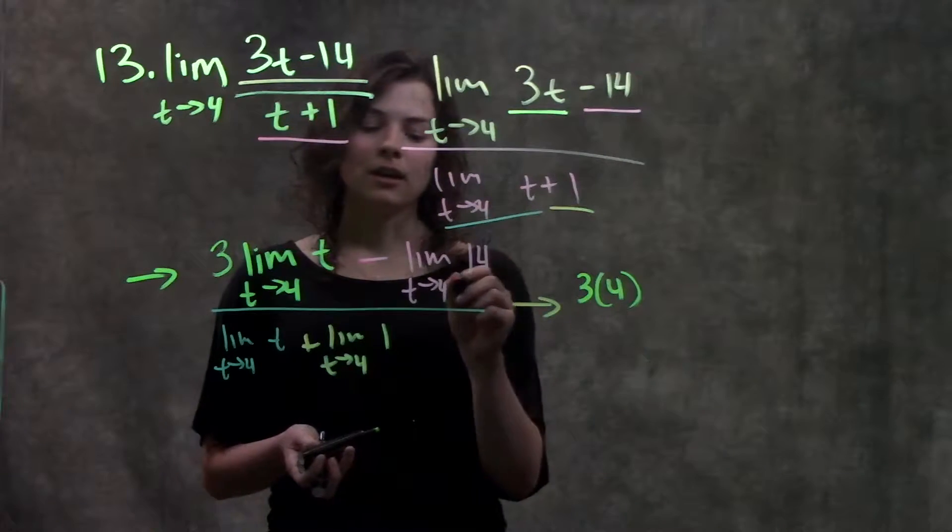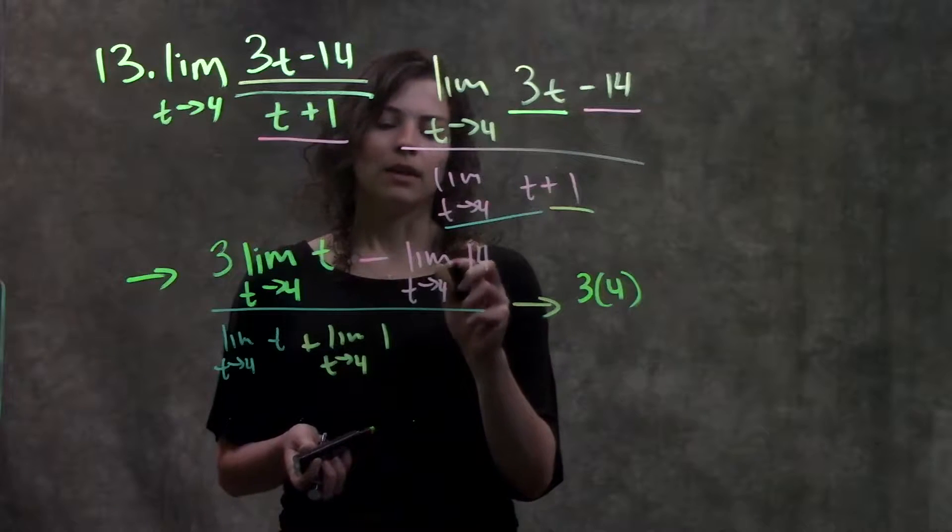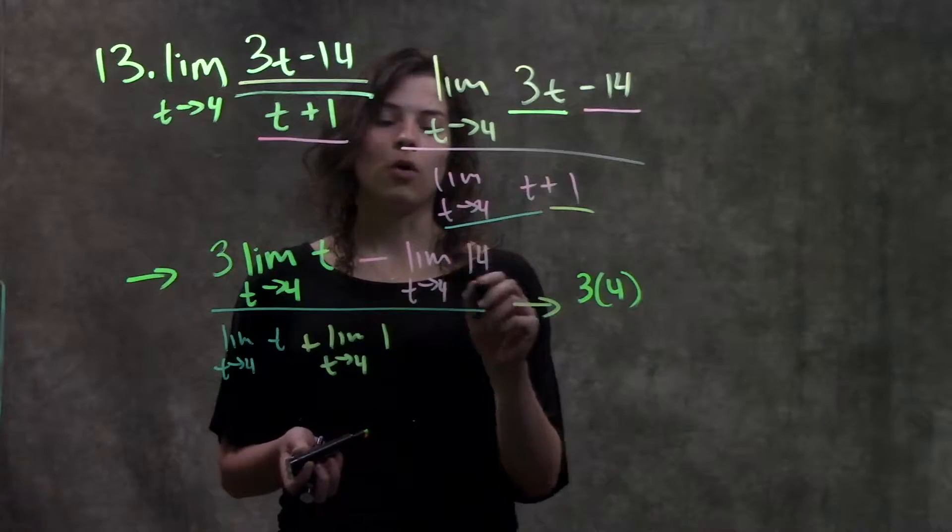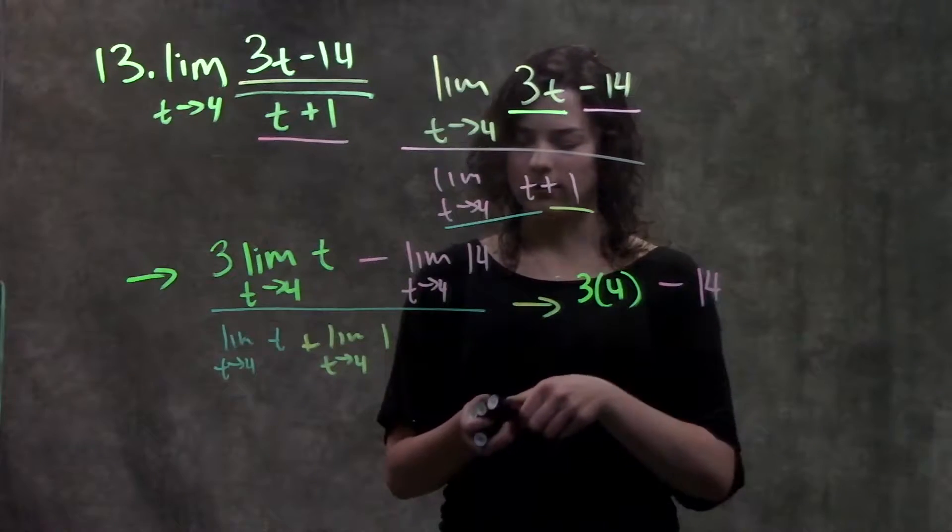Remember, whenever you have a constant here, no matter what number this variable is approaching, the limit of this constant is always going to be just that constant. So I have minus 14.